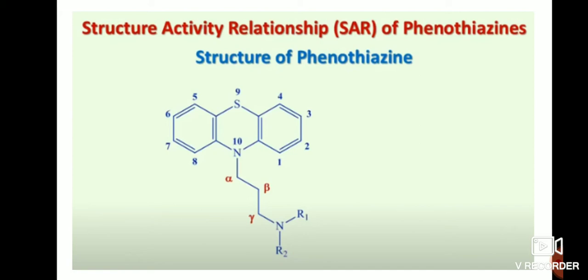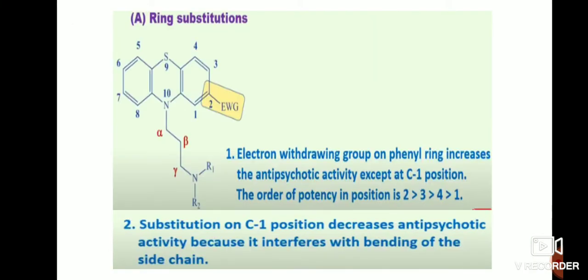Next is the structural activity relationship of phenothiazine category drugs. This is the base structure of phenothiazines. It is divided into three parts: ring substitution, substitution on the alkyl side chain, and substitution on the gamma position.